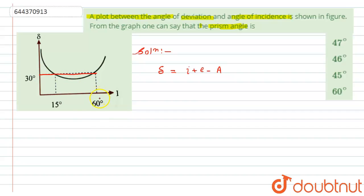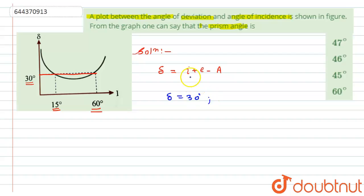Looking at the graph and considering the line parallel to the angle of incidence axis, we can see two values of angle of incidence: 15 degrees and 60 degrees. For both these values, the angle of deviation is the same — 30 degrees from the graph. So the angle of deviation equals 30 degrees.